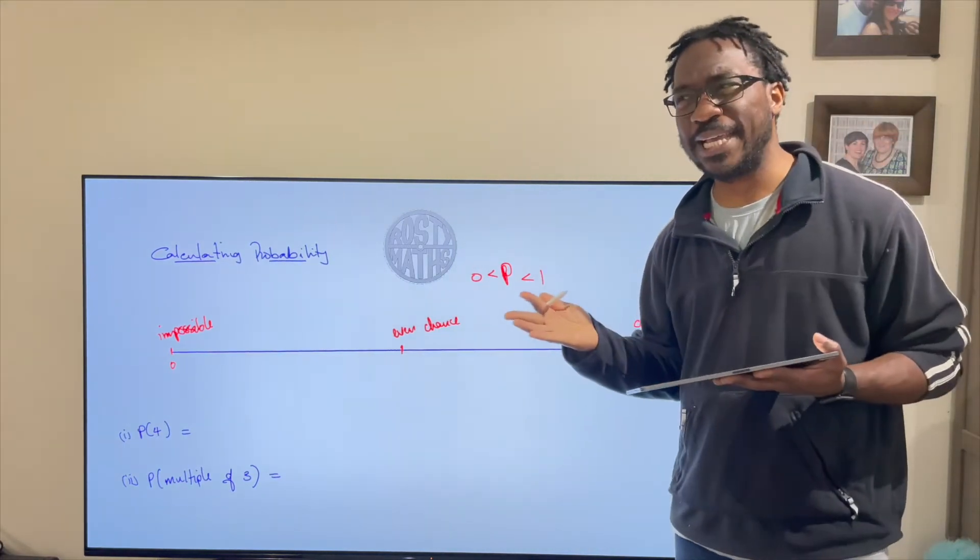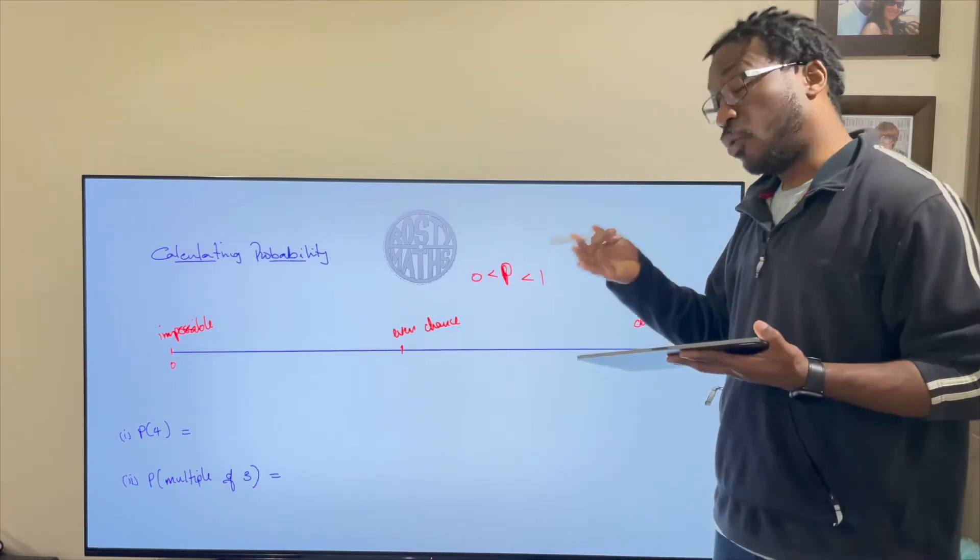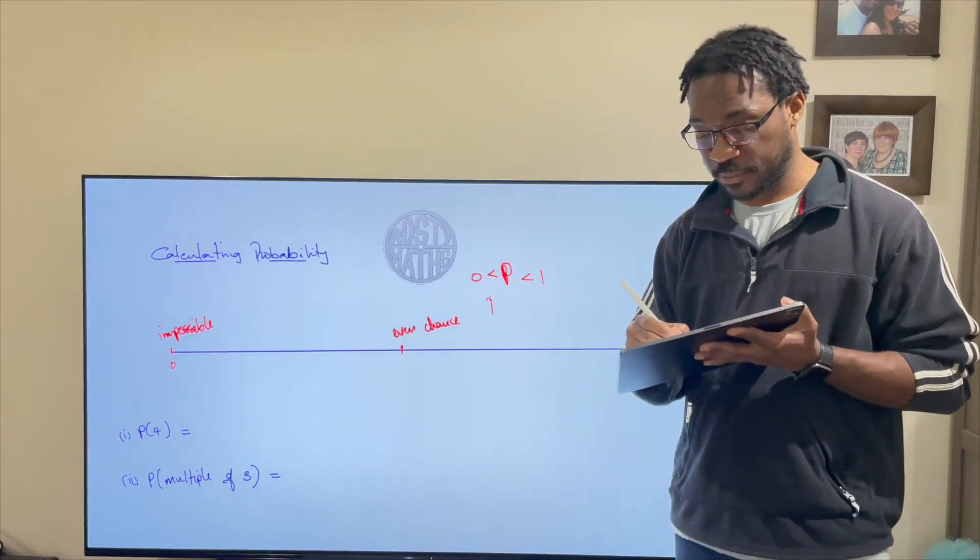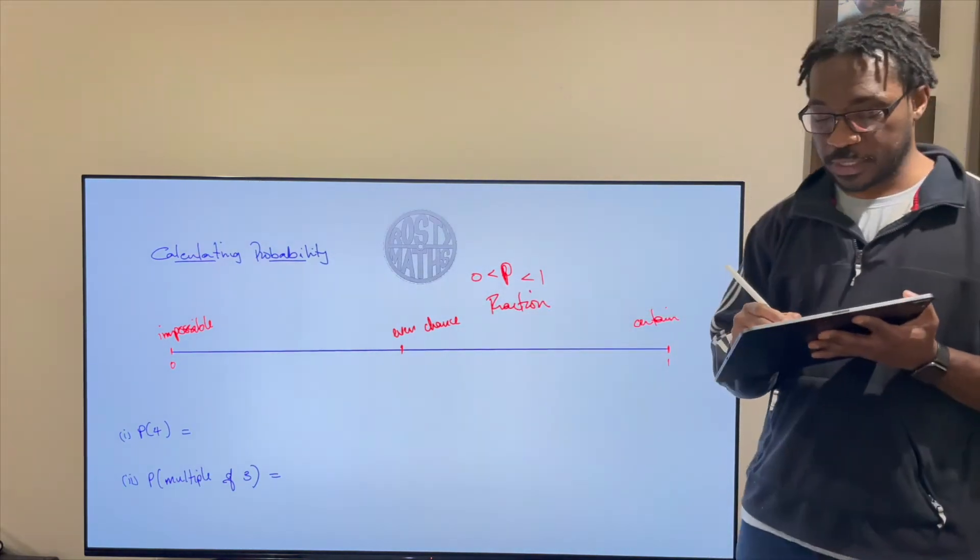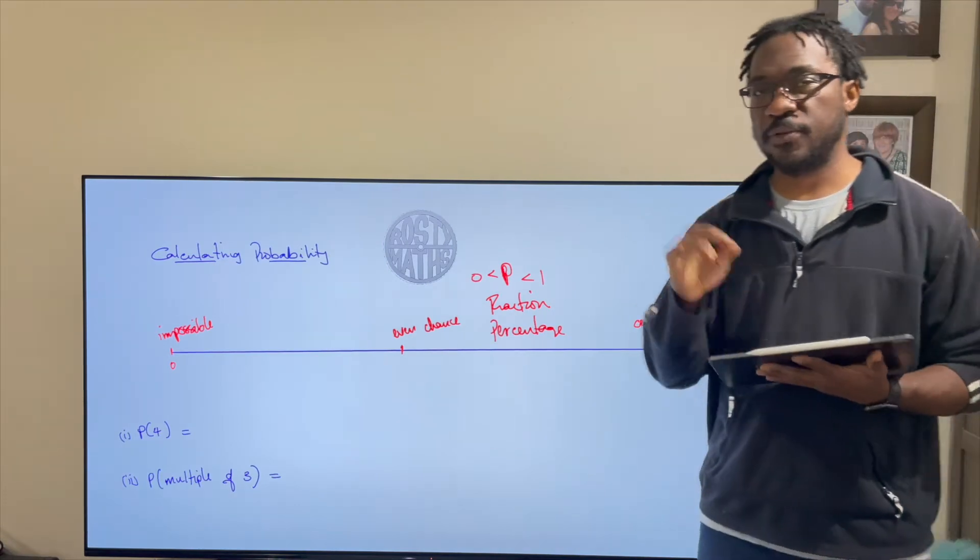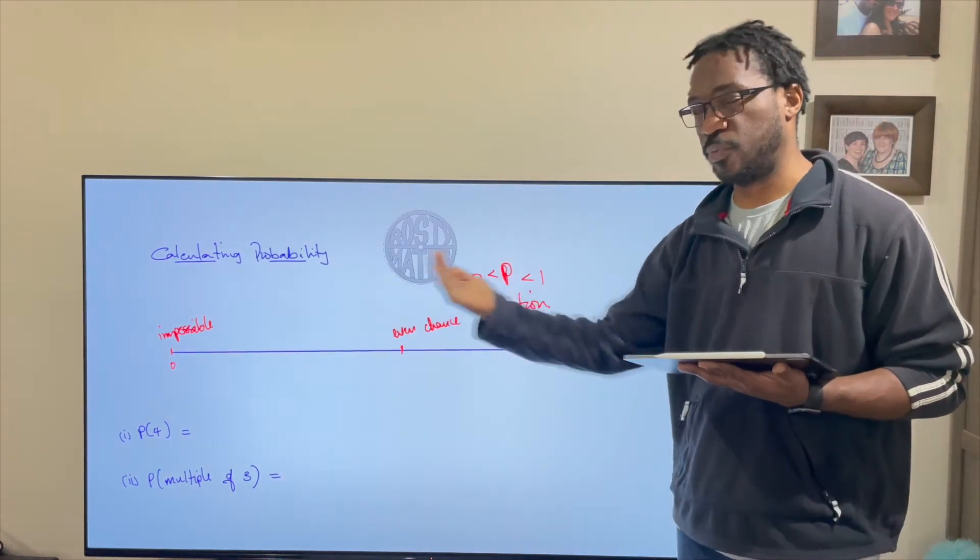So that means the probability will usually be a decimal. Or you can represent your probability as a fraction or you can represent your probability as a percentage. These are all the different ways to represent your probability but bear in mind we're looking for between zero and one.